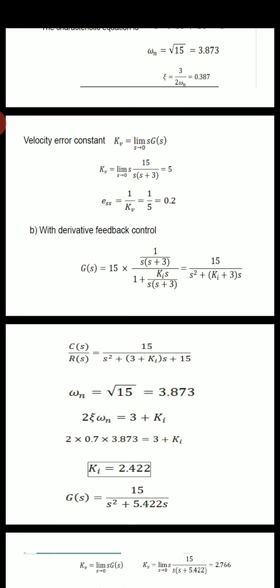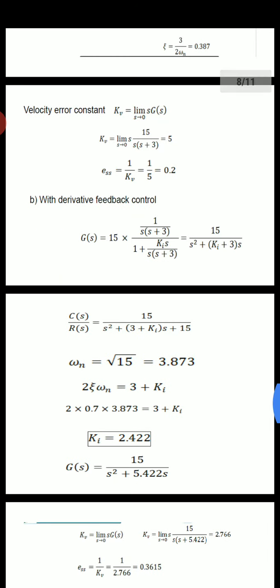Using G(s) divided by [1 + G(s)·H(s)], we get that transfer function. Comparing with the standard equation, ωn = √15 = 3.873. From 2ζωn = 3 + ki, substituting ζ = 0.7 and ωn = 3.873, we solve to get ki = 2.422.